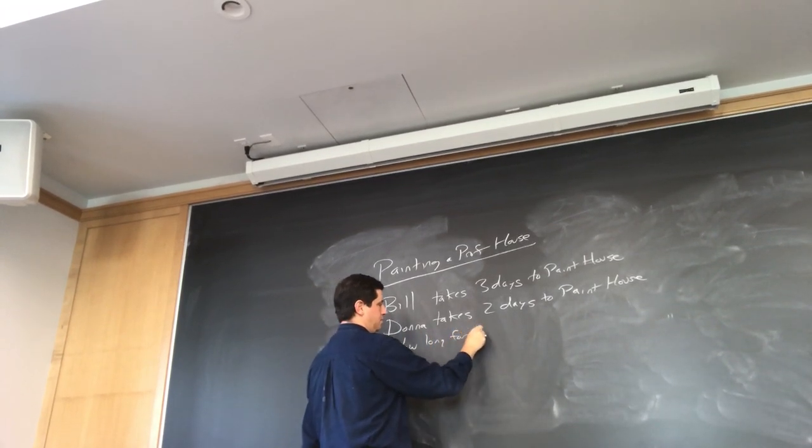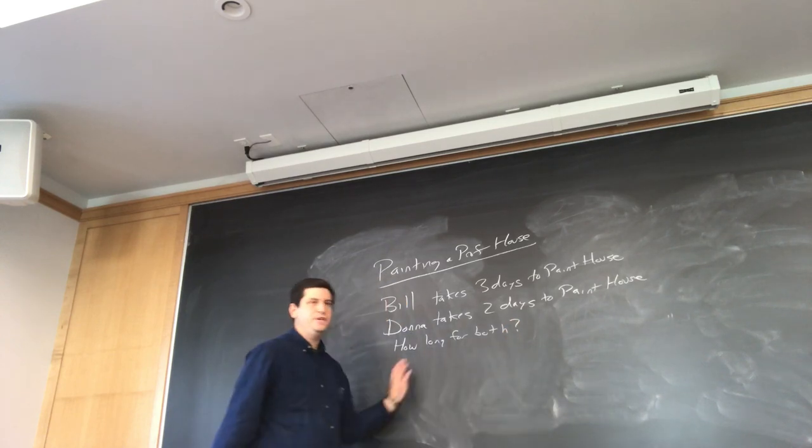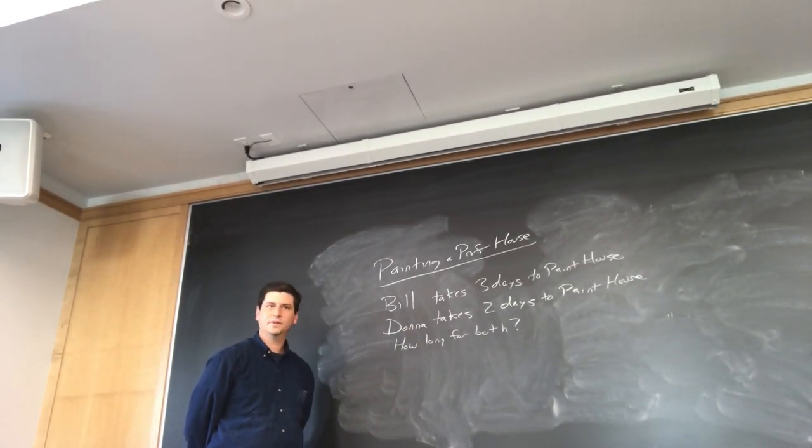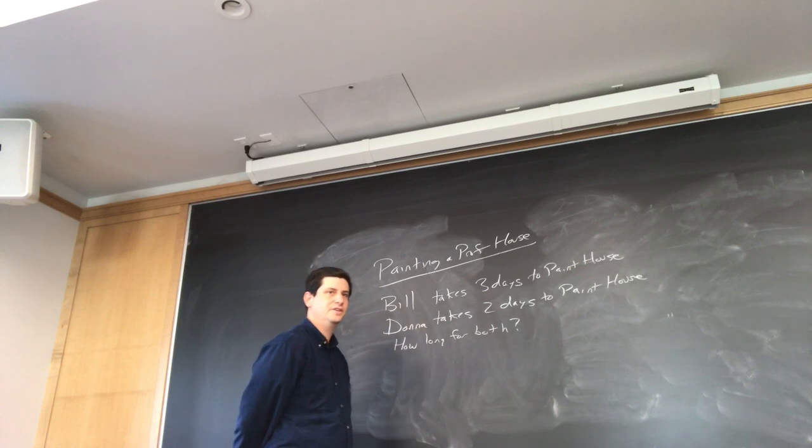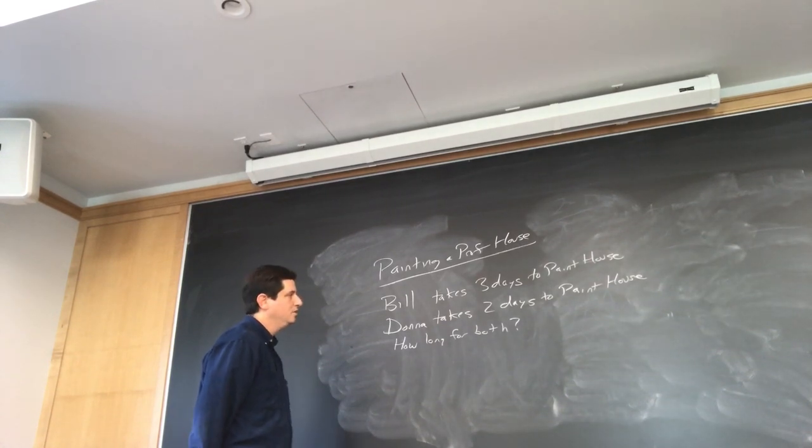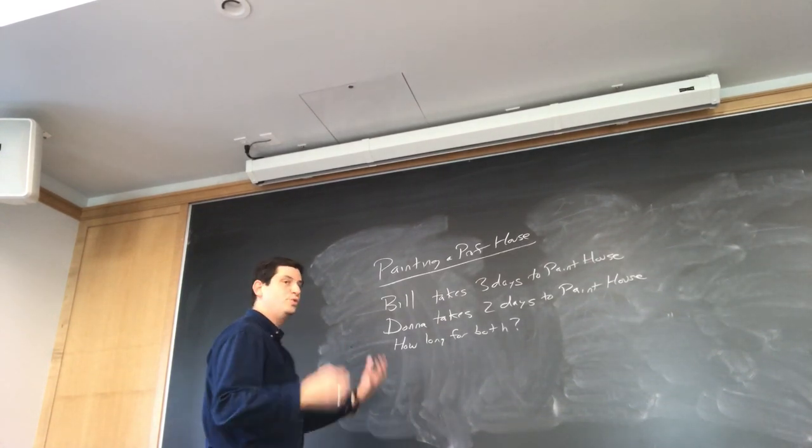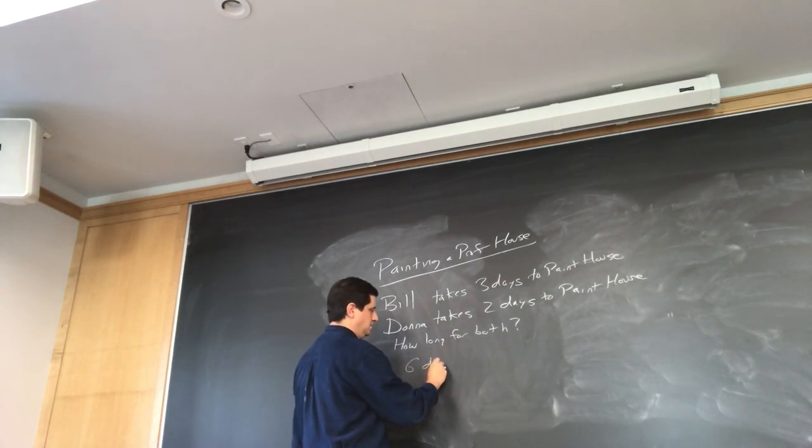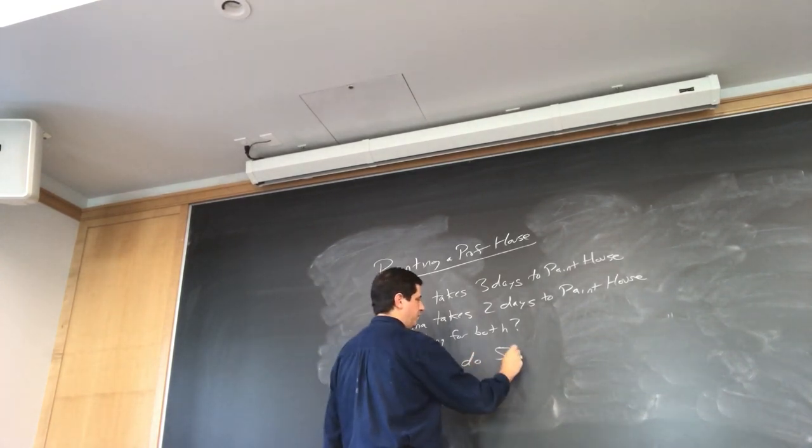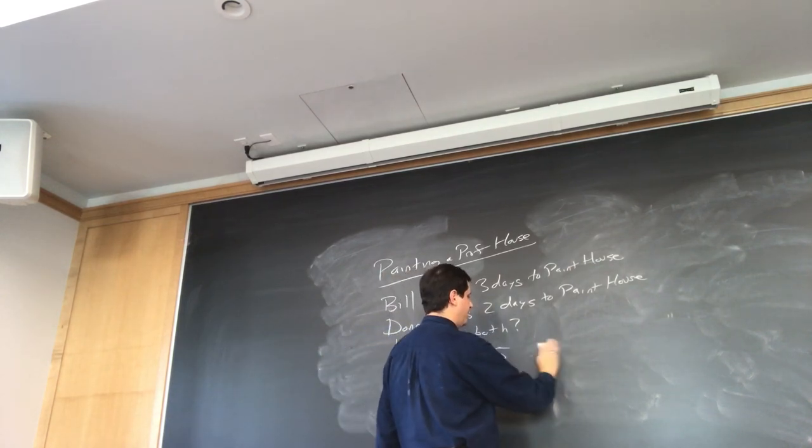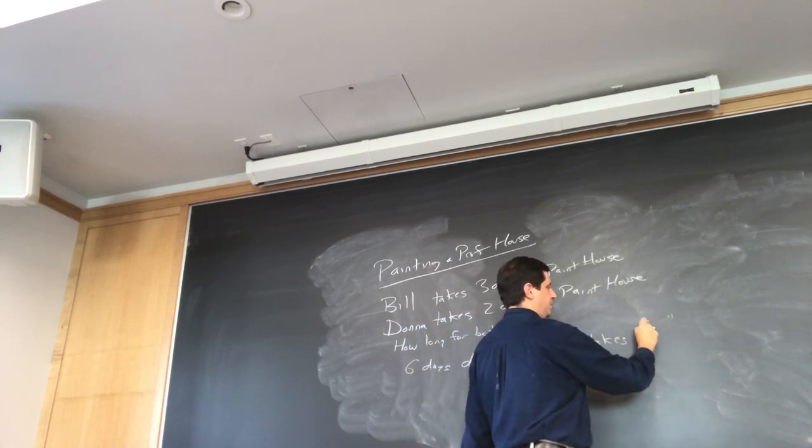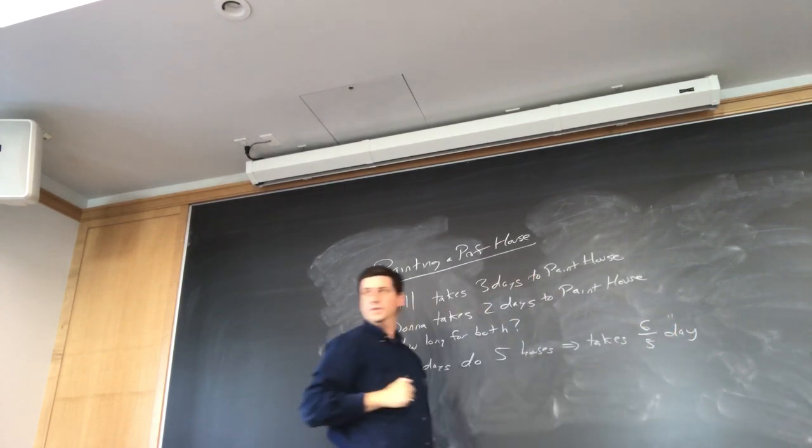And now the two of them paint together. How long for both? So normally they would give you five choices. A, B, C, D, and E. How would you solve this problem? Yes. I would see how many houses they could paint in six days together and divide it by six. Okay, so that's one way. That's a nice way to do the algebra. So in six days they do how many houses? Donna will paint three, Bill will paint two. Five. So it takes, to do five houses. So therefore it takes six-fifths of a day. Yes? He paints a third of a house a day, she paints half of a house a day. Donna paints half of a house a day. So if they paint for D days, they paint the whole house. And so you would solve, and not surprisingly, if you do the algebra you get five-sixths D equals one.